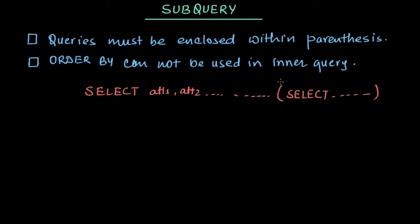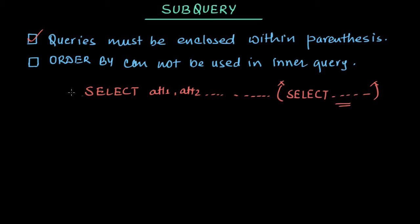The first rule is that the inner query must be enclosed in parentheses. The second rule is that we cannot use ORDER BY inside the inner query; however, we can use GROUP BY to satisfy requirements. Note that this applies to MySQL — there may be other database management systems that allow ORDER BY in sub-queries, but in general it is not allowed.